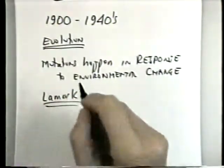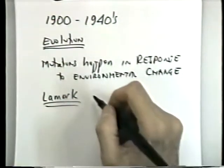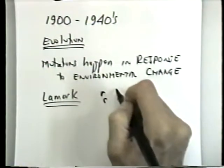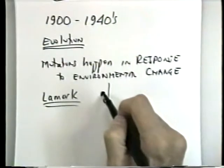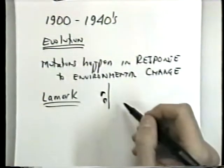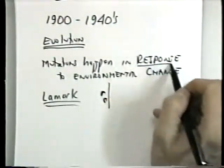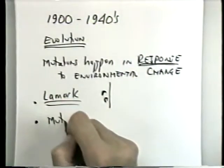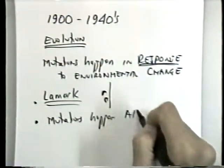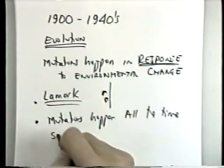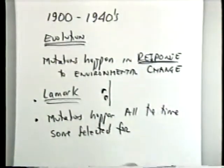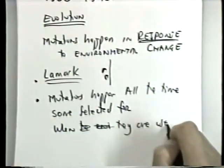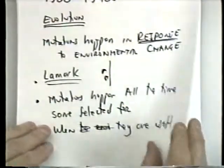There were experiments by a guy named Lamarck — it was either a toad or a reptile. Under certain circumstances, he thought they were developing little suction cups on their feet to help them climb up a wall. The idea is that was incorporated into the genome. The argument is that in response to a change in the environment, you get a mutation. The opposite idea was that mutations happen all the time, but only some are selected for when the environment favors them, because the environment has changed.